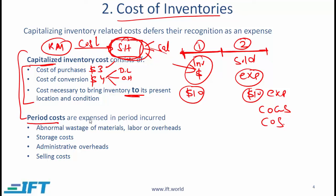Period costs are expensed in the period where they are incurred. If while creating inventory there is some abnormal wastage of materials, then the associated raw material cost, labor, and overhead are all expensed. The larger thought behind this is: the definition of an asset is something that will give you a future benefit. If you are creating tables or chairs and because of some defect you have to scrap 100 tables, then all the cost associated with those wasted tables has to be expensed because there is not going to be any future benefit.